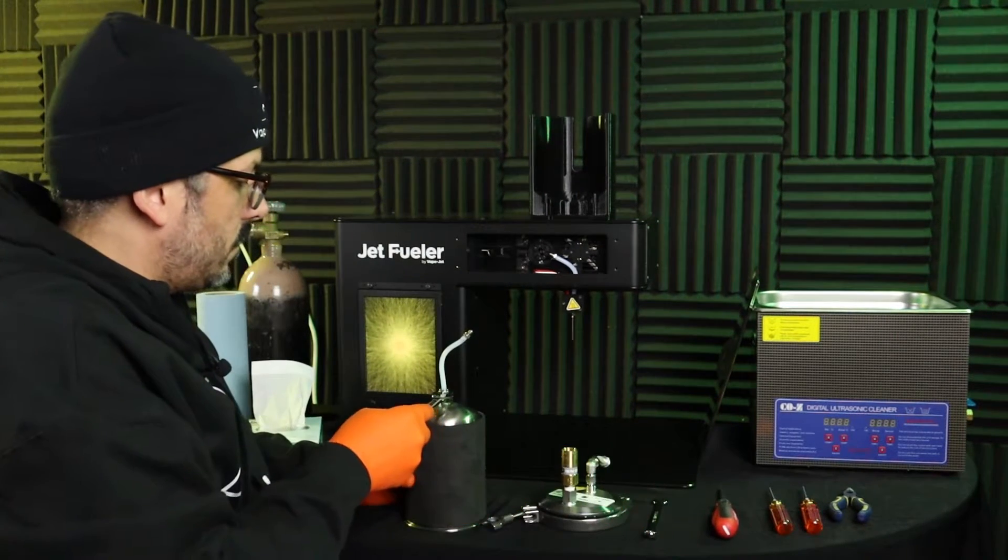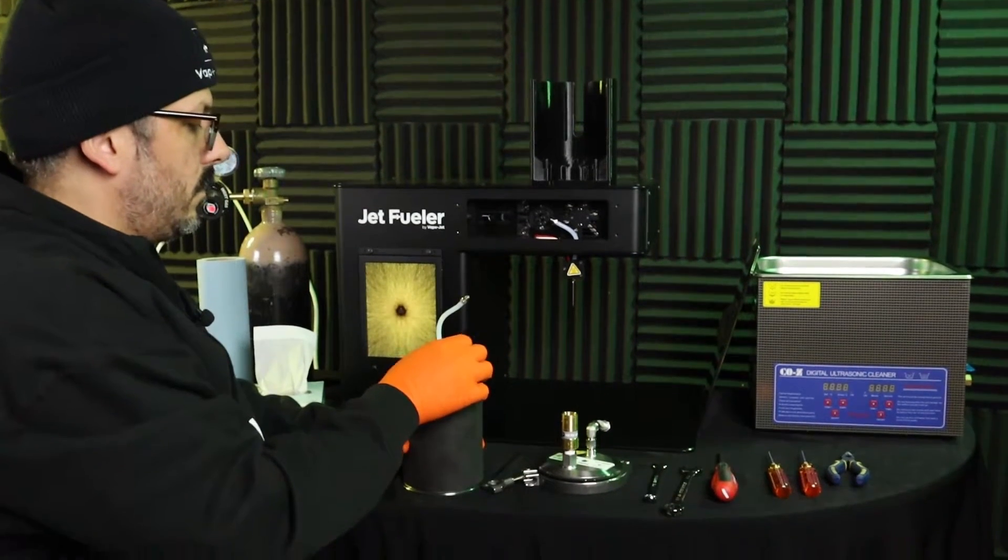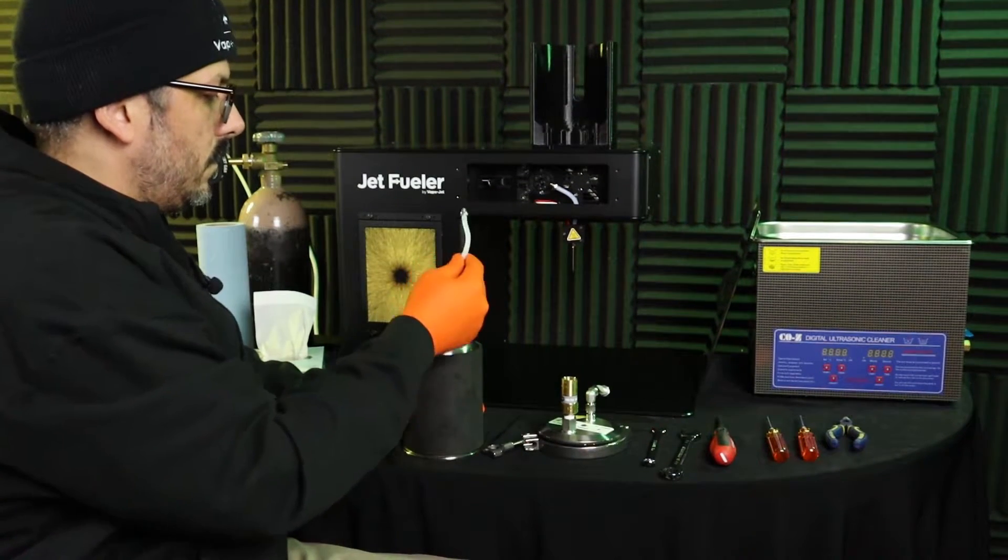Disconnect the compression fitting on the bottom of the bowl reducer with a 9/16 open-ended wrench and place it in the beaker with the syringe parts, valve, and isopropyl alcohol.